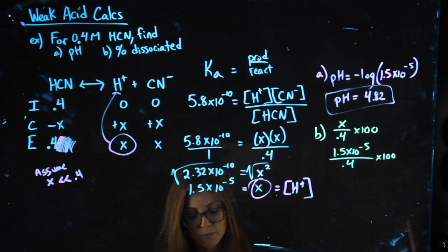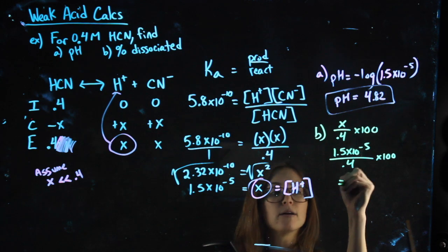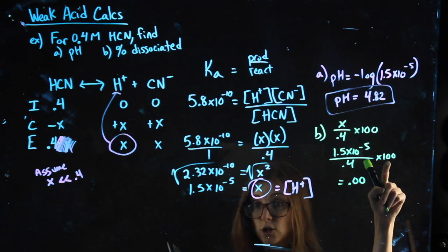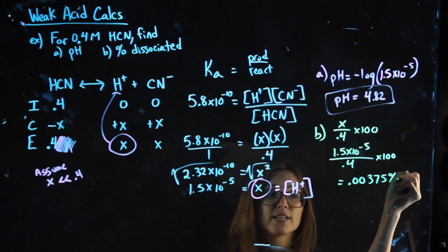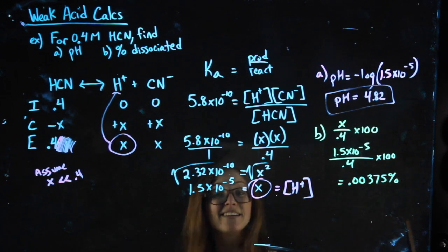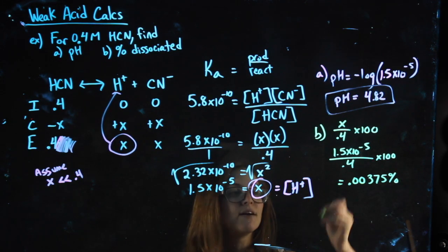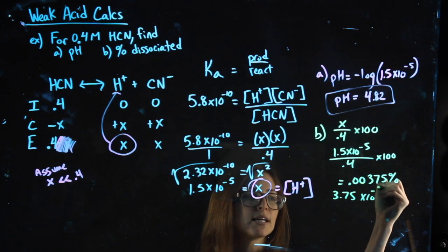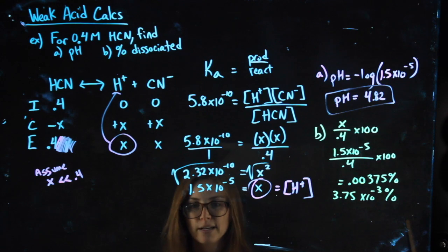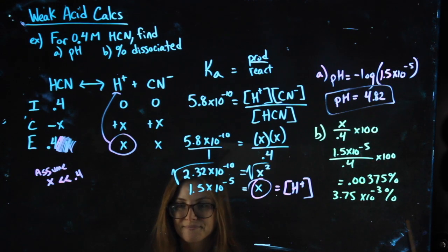We should get a small value since it's weak. We know it shouldn't dissociate much. So we get 0.00, this is after I multiplied by 100, 0.00375%. Barely dissociates. That makes sense. If you have it in scientific notation, 3.75 times 10 to the negative 3%, that's also fine. All right, try it.